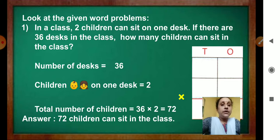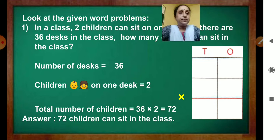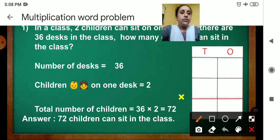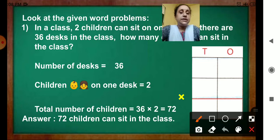Look at the given word problems. Number 1. In a class, two children can sit on one desk. If there are 36 desks in the class, how many children can sit in the class? So, number of desks, it is written 36. Now, we will write here 36.